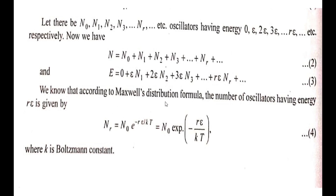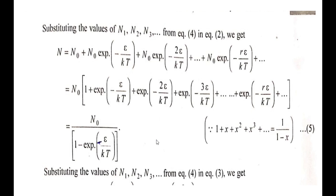According to Maxwell's distribution formula, the number of oscillators having energy re is given by nᵣ = n₀ · exp(−re/kT), where k is the Boltzmann constant. This is the Maxwell's distribution formula (Equation 4).